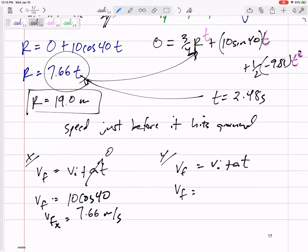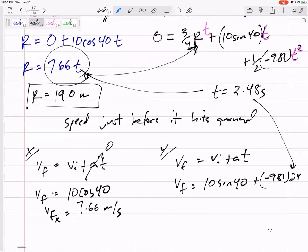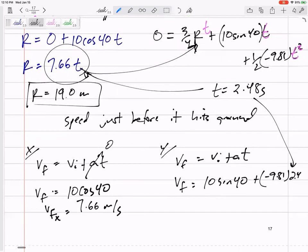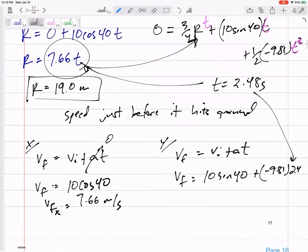It started with 10 sine 40 positive. My acceleration is negative. And now, 2.48. Let me try to put an 8. It's not letting me. All right. 2.48 right there. And now, we get final velocity negative 17.9. And that makes sense, right? That's a negative Y velocity.